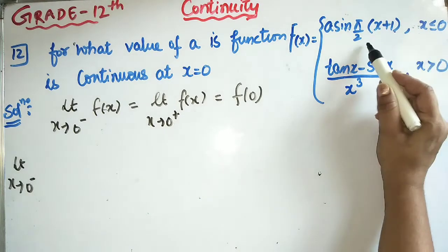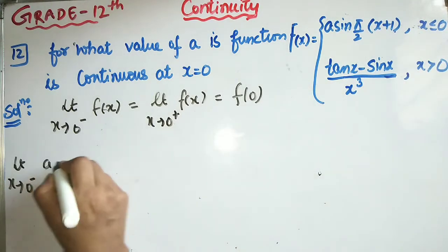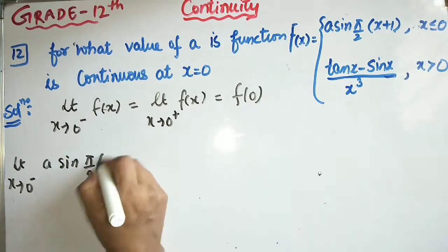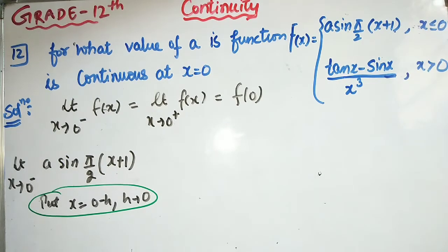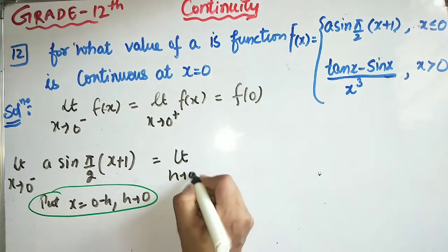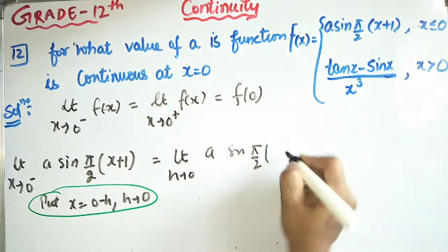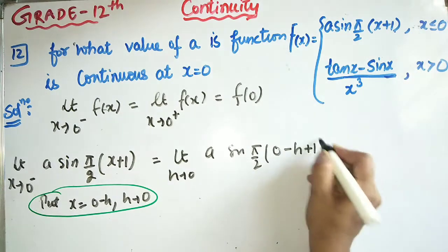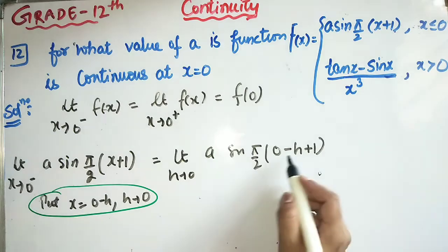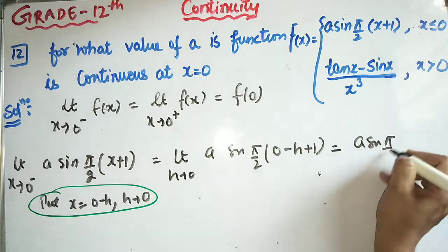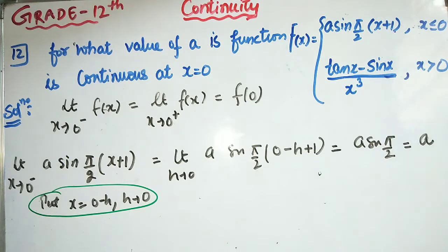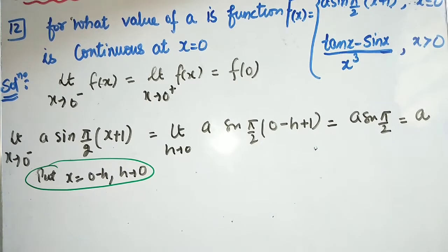For x < 0, the function is a·sin(πx/2) + 1. We put x = 0 - h, h → 0. The limit becomes a·sin(π/2 · (0 - h)) + 1. Putting h = 0 directly: a·sin(-π/2) = a·sin(90°) ... Actually sin(π/2) = 1, so the left-hand limit is a.